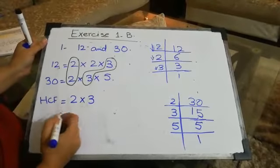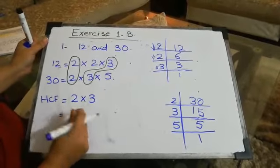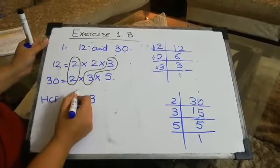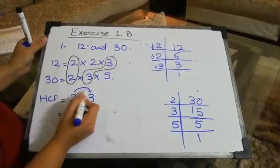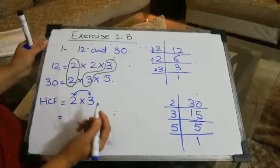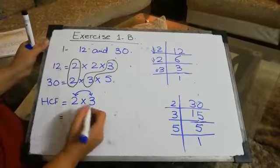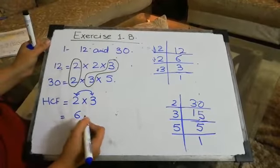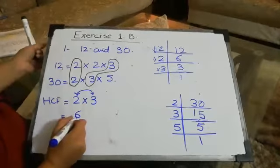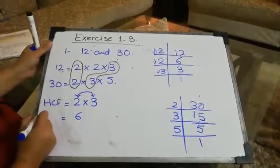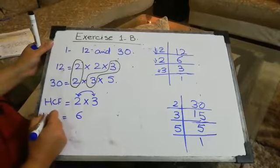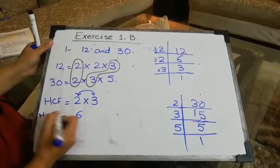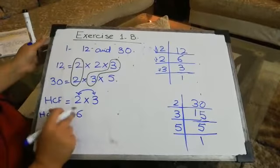So we have written 2 multiplied by 3, and we are going to multiply these two numbers. 2 times 3 is 6. So 6 is your highest common factor.